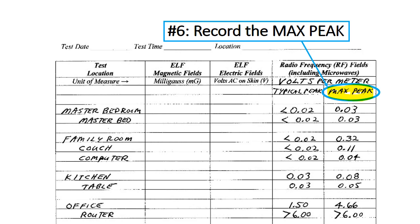I would write that under the maximum peak column on my datasheet — 5.29 in this case. For instance, on this sheet for the master bedroom, the maximum peak was 0.03, a fairly low level. In the family room, the maximum was 0.32 volts per meter. Even though the typical level in the family room was normally much smaller — around 0.02 — this shows that at some point there was a higher peak measured. We record that, and it can be very helpful later.